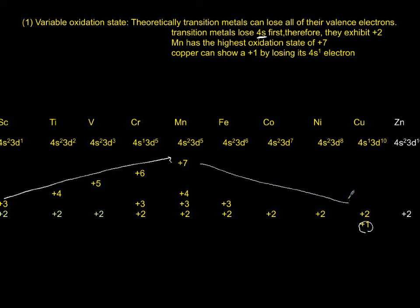They go back. Iron has plus 3, plus 2. Cobalt has plus 2. Nickel plus 2. Copper plus 2. It also shows a plus 1. This is the only transition metal that you have plus 1 for. Zinc is not a transition metal, has plus 2.